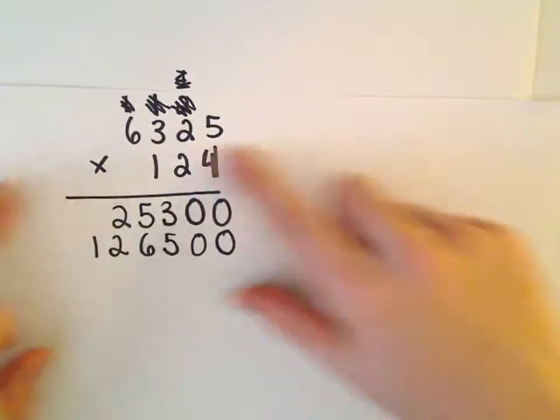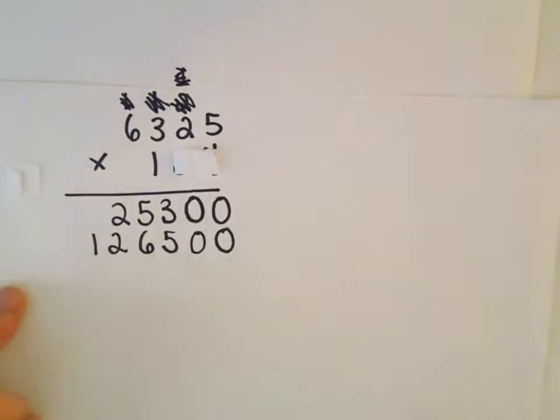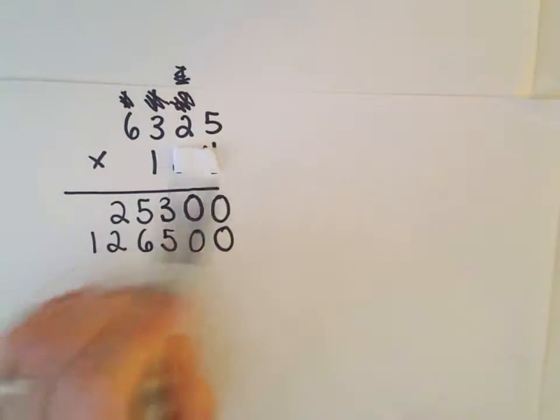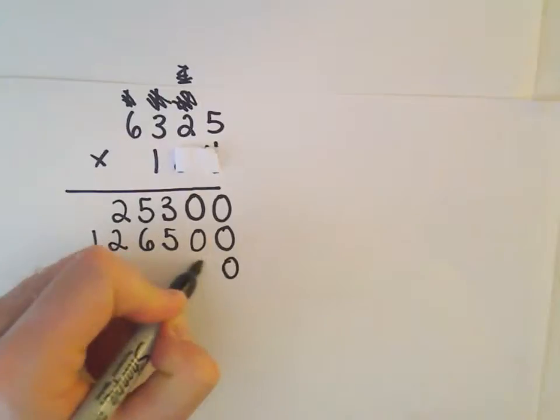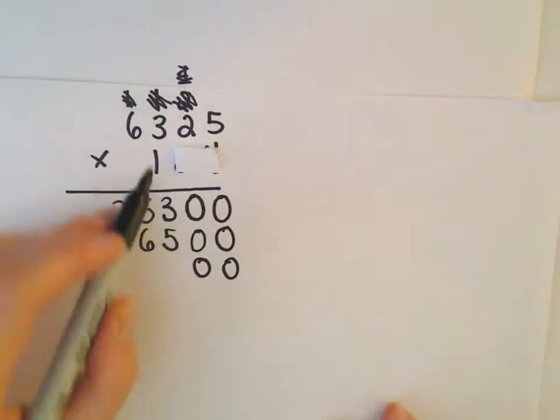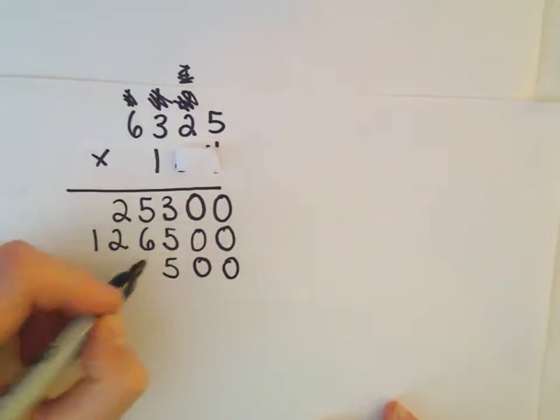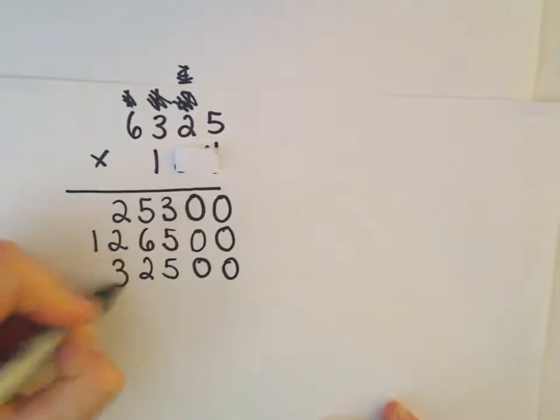And again, the same thing. I'm just going to move to the next digit. Well, that means we can now forget about the 2 and the 4. So I've moved over 1, 2 digits. I'm going to add 1, 2 zeros. Okay. So let's see, we now do 1 times 5. Well, this is easy. 1 times 5 is 5, 1 times 2 is 2, 1 times 3 is 3, 1 times 6 is 6.